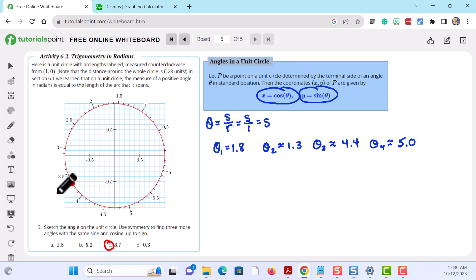So to sketch the angle we draw the terminal ray through 3.7, draw our initial ray along the positive x-axis, and then draw our counterclockwise rotation until we get to the terminal side. And that would be theta sub 1 which is equal to 3.7.